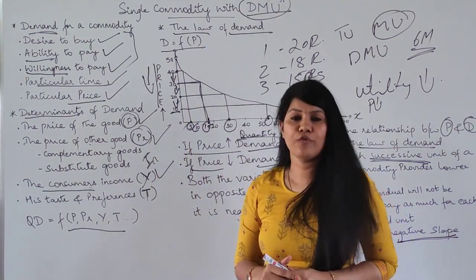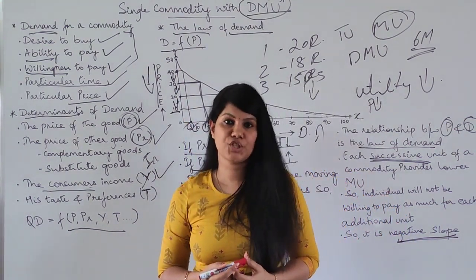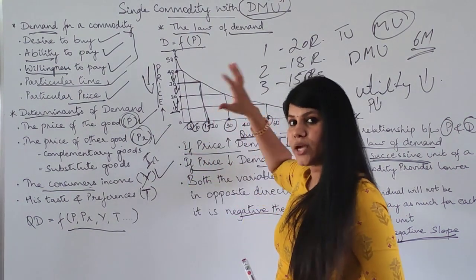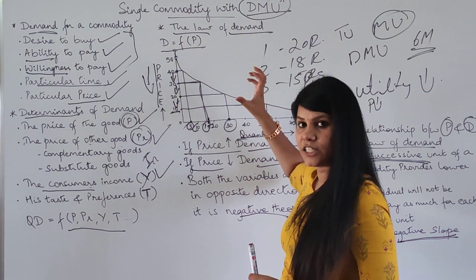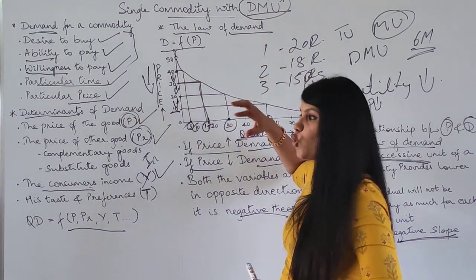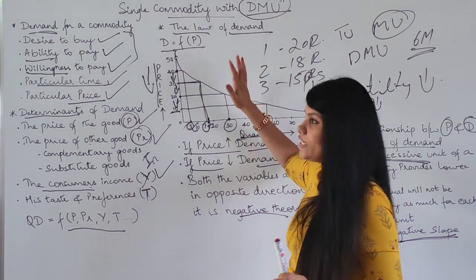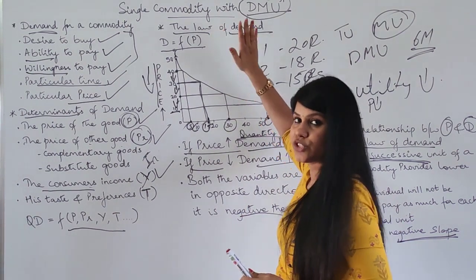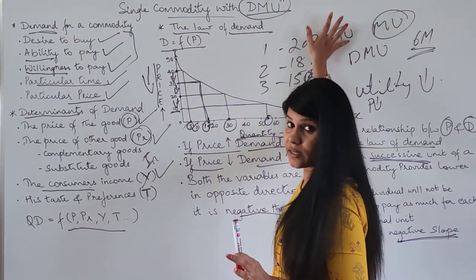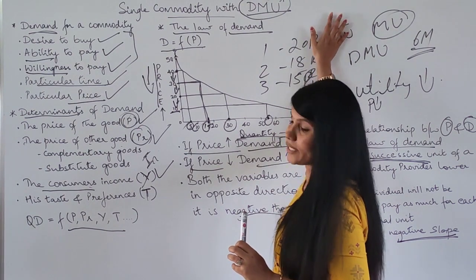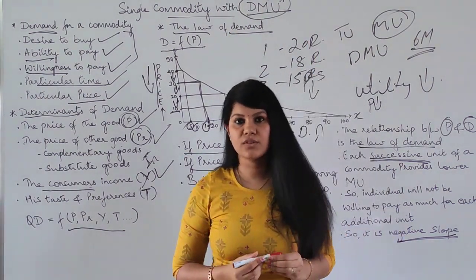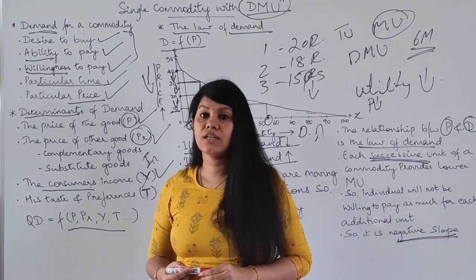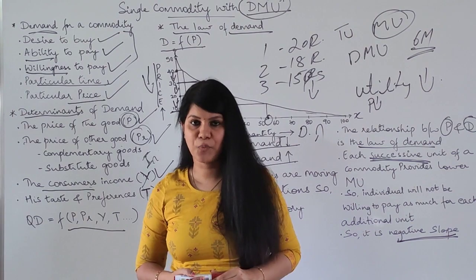In the previous class, I mentioned that the law of diminishing marginal utility is a base theory that established many other theories — the law of demand is one example. I hope you understood this topic. I'll meet you in the next class. Thank you so much.